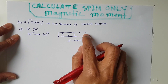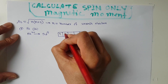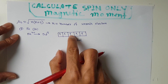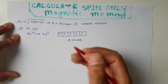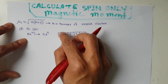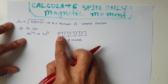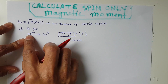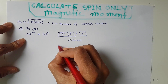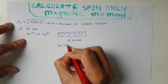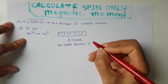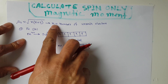These five electrons will be equally distributed in the five subshell boxes: first electron, second electron, third electron, fourth electron, fifth electron. All five electrons are singly occupied — there are no paired electrons. That means Fe³⁺ has a total of five unpaired electrons, so n = 5.